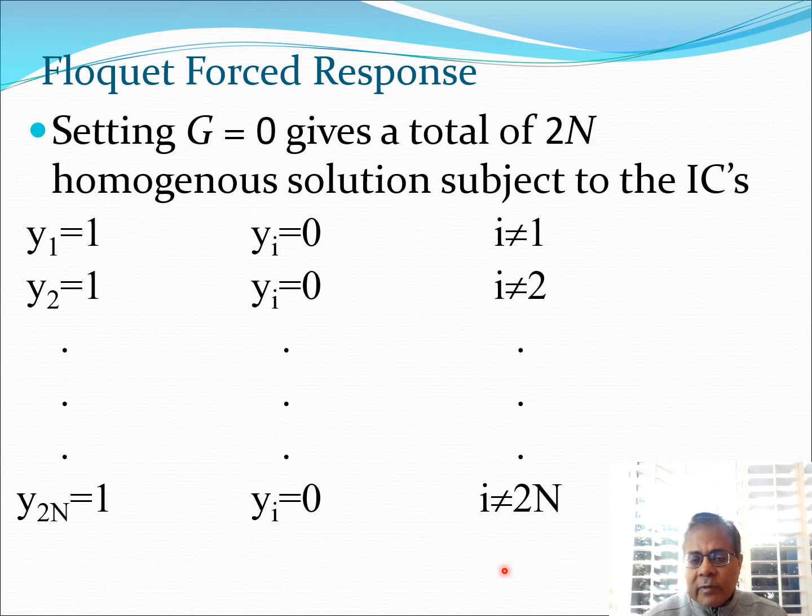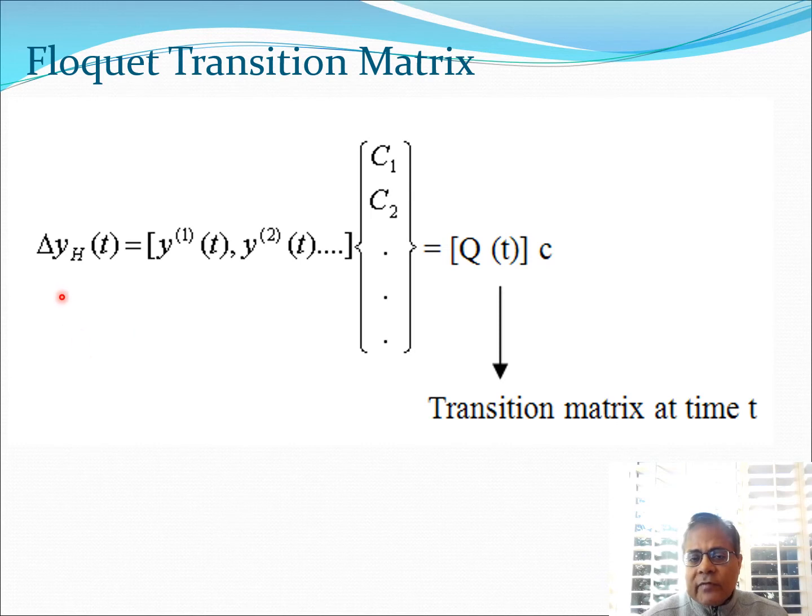Once you solve the system you are going to get something like the Floquet transition matrix. Essentially we can write delta y_H(t) as a series of y_1(t), y_2(t), all the way like that, and then these coefficients c_1, c_2, and so on. If we collect all these terms y_1, y_2, and so on, we will recall from our previous discussion on Floquet theory for stability that this is the Floquet transition matrix at time t, and then we multiply it by the constant coefficients.